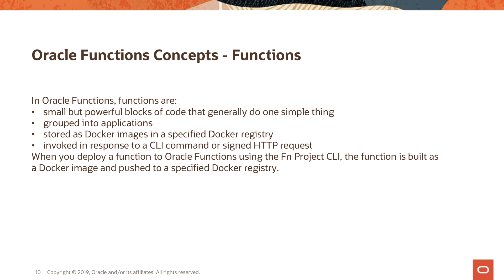Functions are invoked in response to either a CLI command, or through an HTTP endpoint that each function exposes. You can invoke a function using that HTTP endpoint, through external events, through OCI Events, or using the SDKs. Functions are deployed as containers — when you create a function, the definition is stored as metadata in the Oracle Functions service, describing how the function is to be executed.